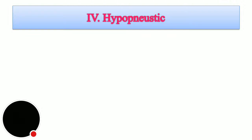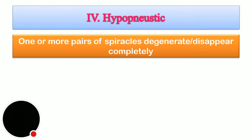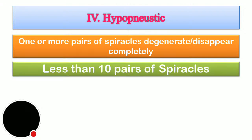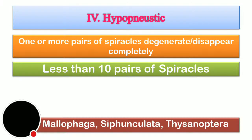The fourth type is hyponoistic, where one or more pairs of spiracles are degenerated or disappear completely. Although there are normally 10 pairs of spiracles, the number gets reduced in later parts of the life cycle, so the total number of spiracular pairs is less than 10. Examples include Mallophaga, Siphonaptera, Thysanoptera, etc. Hypo means fewer than normal — less than 10.